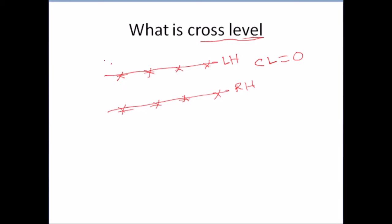Suppose the left side track was lower than the right side track by 3 mm, then you will say the cross level is 3L — the difference between these two track levels was 3L. Suppose this track was lower than the other by 5 mm, then you say 5R, meaning the right side track was lower than the left side track by 5 mm. Cross level means the level difference between left track and right track.